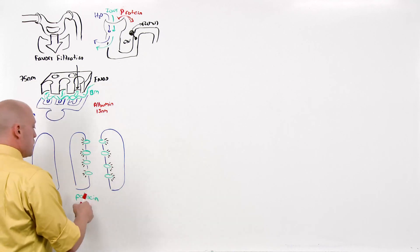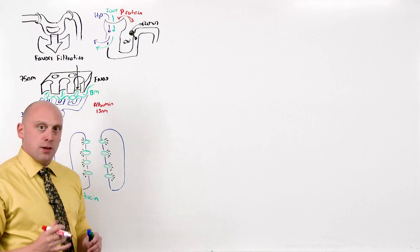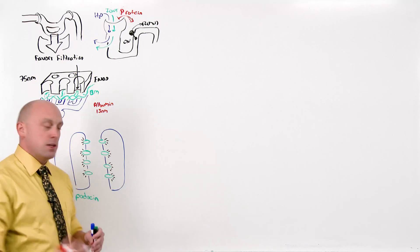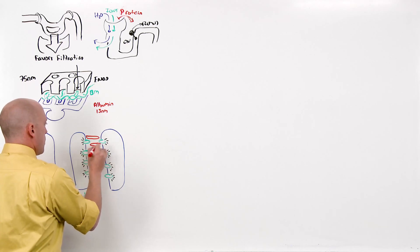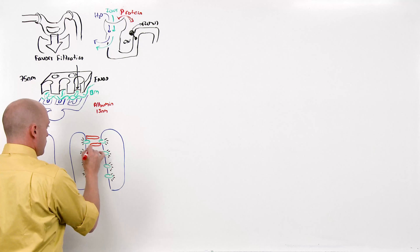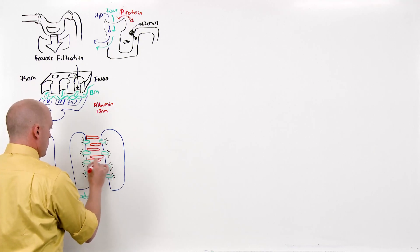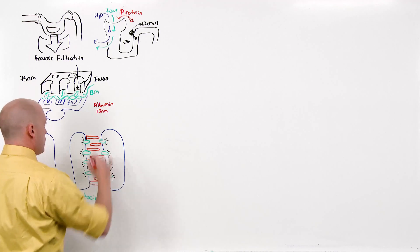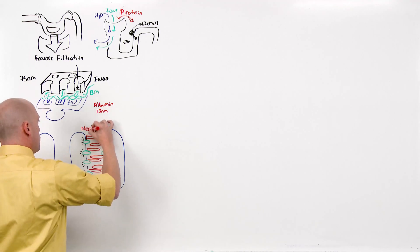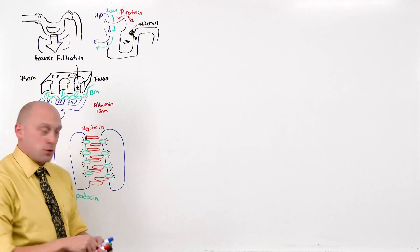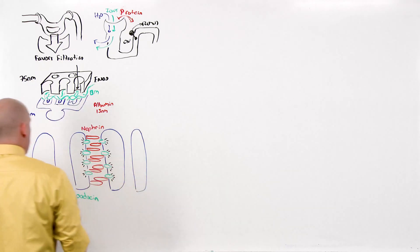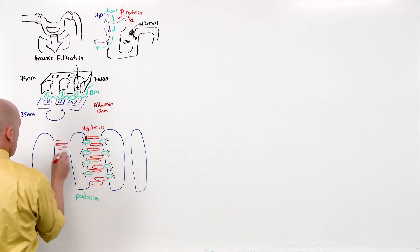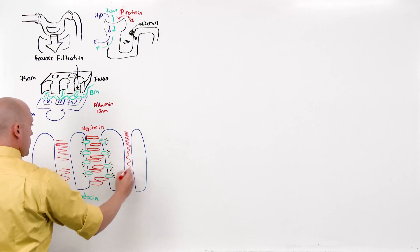From these podocin molecules which are anchoring the structure down to the plasma membrane of interdigitated podocytes is another protein called nephrin. These nephrin bridges do all of the selective filtration.